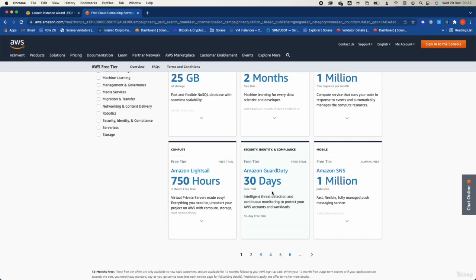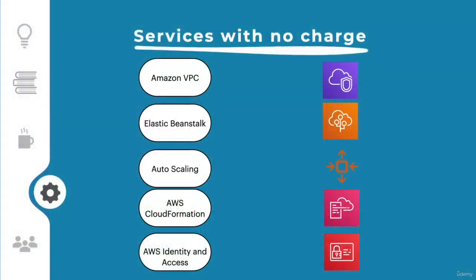Some services come with no charge in AWS, like Amazon VPC (Virtual Private Cloud), Elastic Beanstalk, Auto Scaling, AWS CloudFormation, and AWS Identity and Access Management. However, the resources created by those services — for example, if Auto Scaling adds more machines to support demand — will be charged.